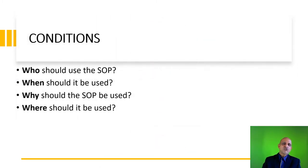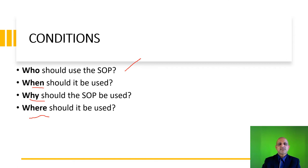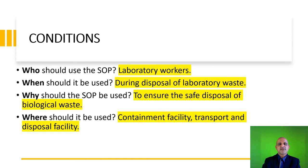The conditions for the SOP should answer the following questions: who should use the SOP, when should it be used, why should it be used, and where should it be used. An SOP is a very specific document; it cannot be adapted for other situations without undergoing the process of implementation and validation. In the case of disposal of laboratory waste, the users are the laboratory workers; it is used during disposal of laboratory waste; it is used for safe disposal of biological waste; and it should be used at the containment facility, transport facility, and disposal facility as defined by the respective SOPs.